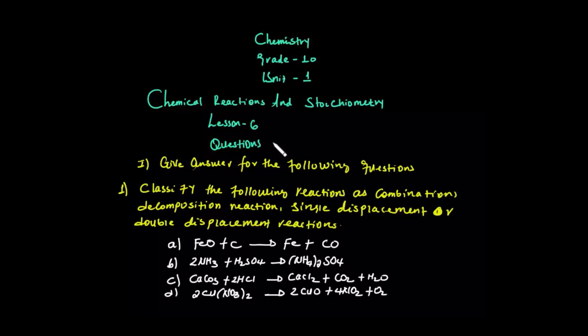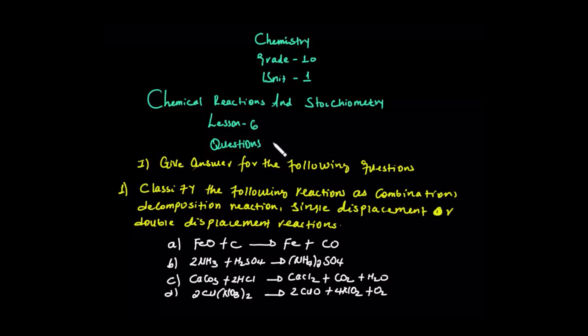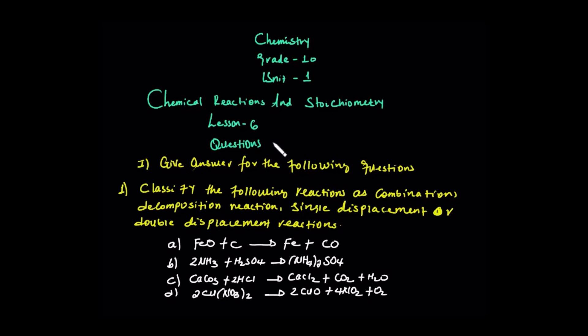Types of chemical reactions. Chemical reactions can be classified into four categories: combination reaction, or the other name is synthesis reaction. The second one is decomposition reaction, or we could call it analysis reaction. The third one is single displacement reaction, and the fourth one is double displacement reaction.